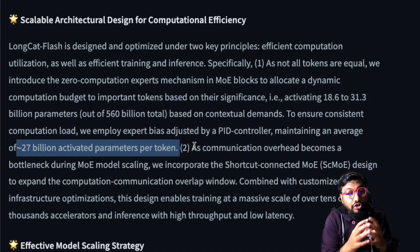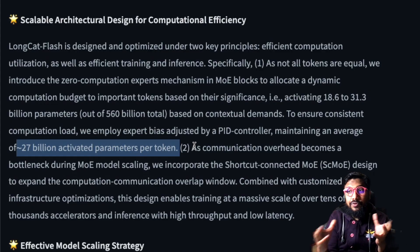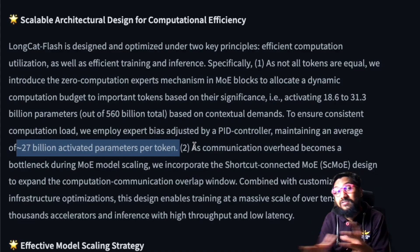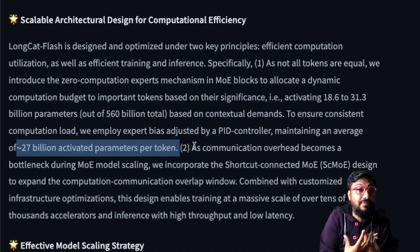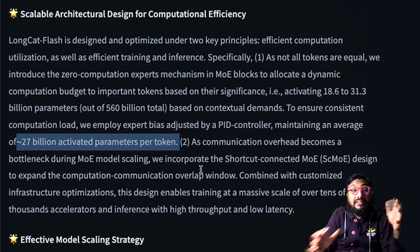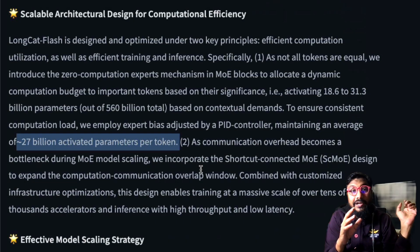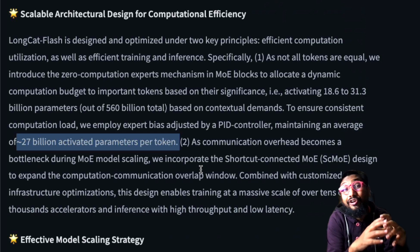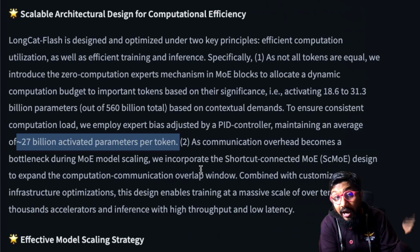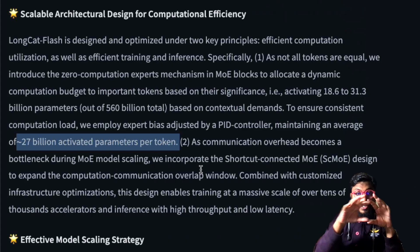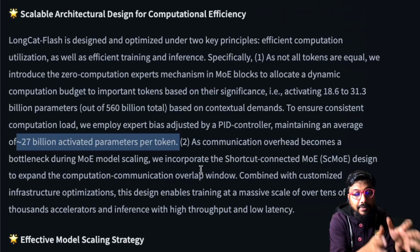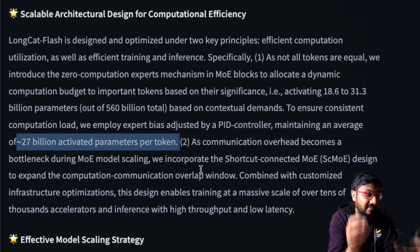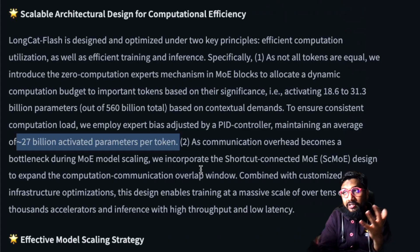This is a mixture of experts model with a new effective computation utilization strategy. For every given token, they have managed to achieve an efficiency of just 27 billion active parameters. In the current realm of large language models, 27 billion is not very large, but they've achieved a new strategy to use only 27 billion active parameters at a given time for a given token.